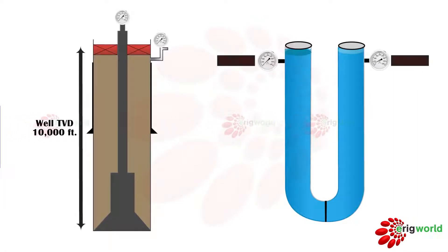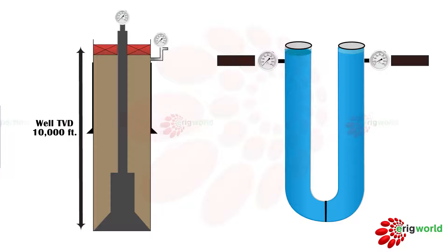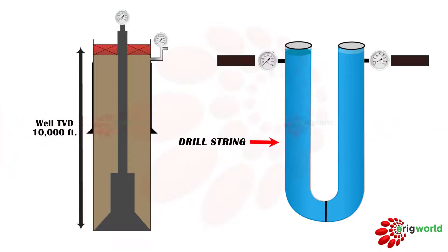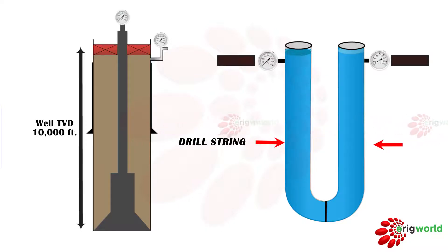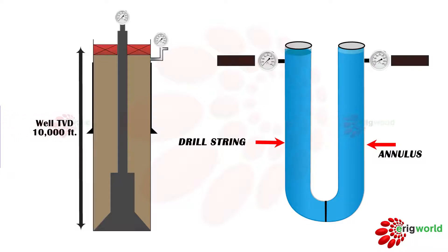Any well can be considered as a U-tube. One arm of the U-tube is considered the drill string, and the second arm is considered the annulus. Where both arms connect is considered the BHP.